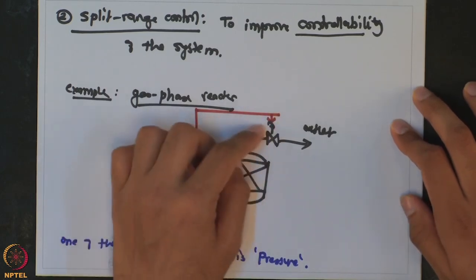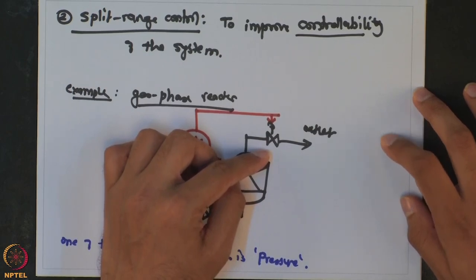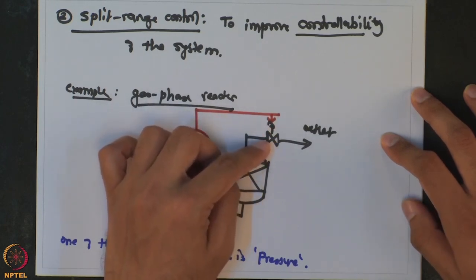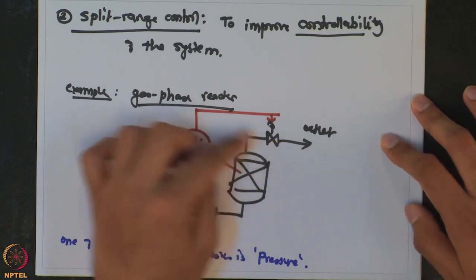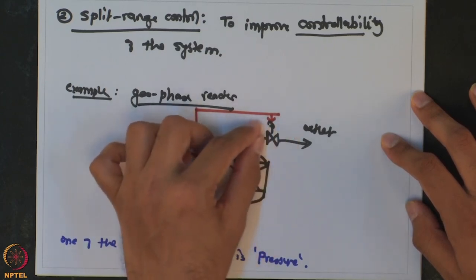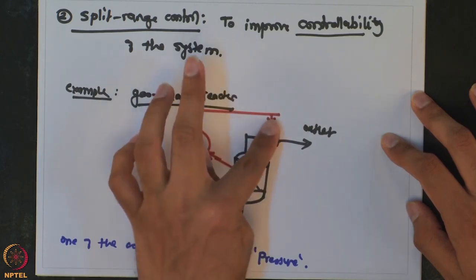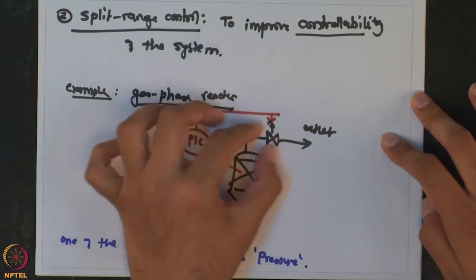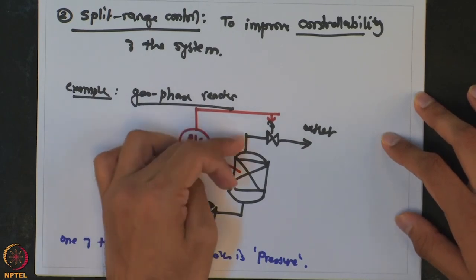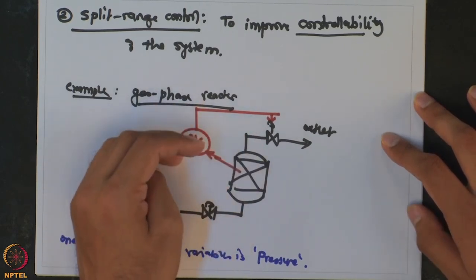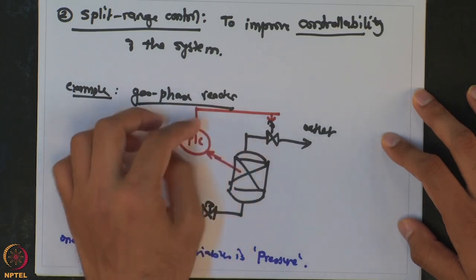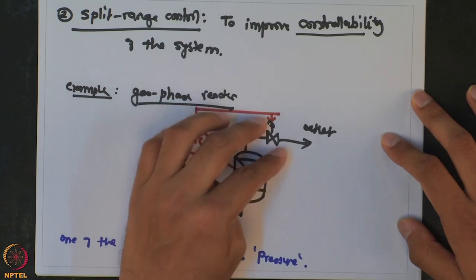As the pressure increases, you open the outlet valve, but there is a limit — the maximum is when the valve is completely open. At that point, the resistance is dictated by how much vapor the pipeline can carry. Even with the valve fully open, it is as if there is no valve and the entire pipeline carries vapor out. But in a runaway situation with a lot of vapor being generated, this may not be sufficient. The pressure keeps building because you can no longer manipulate it — the manipulated input is saturated and you have lost controllability.